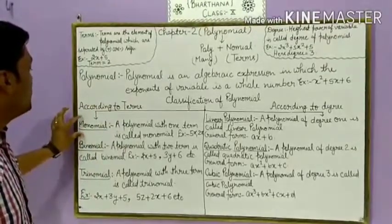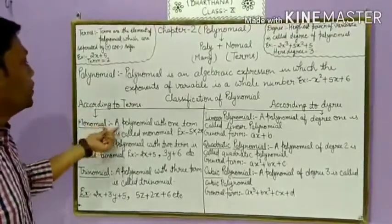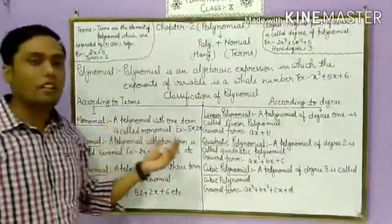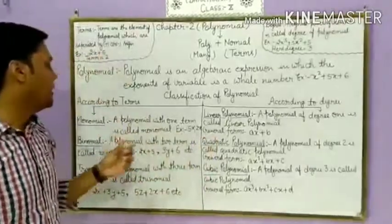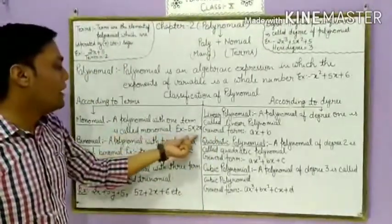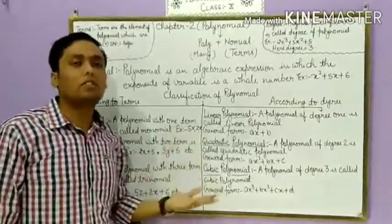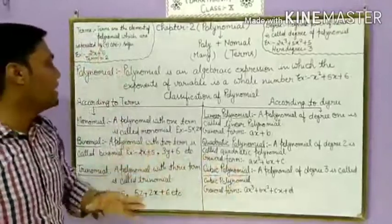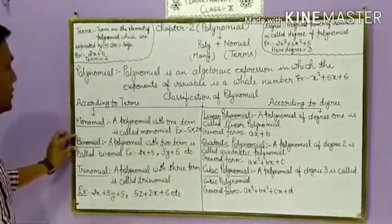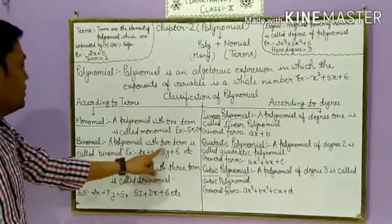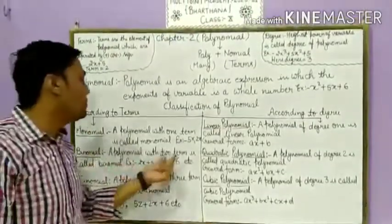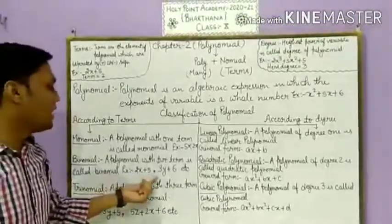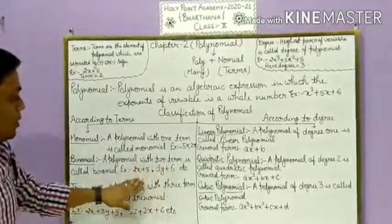According to terms, the first type is monomial. A polynomial with one term is called a monomial. For example: 5x, 2x, 3x, 4x, 5x, 6x, 7y, and so on. The second type is binomial. A polynomial with two terms is called a binomial. For example: 2x plus 5, 3y plus 6.